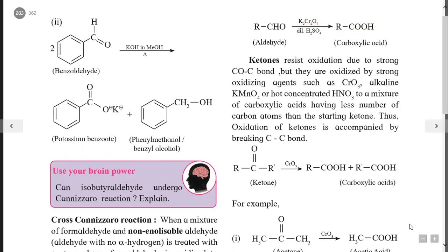The general equation for Clemmensen reduction: C=O + 4H in the presence of Zn(Hg) and concentrated HCl gives CH2 plus H2O. The carbonyl C=O bond is converted into a methylene CH2 group.